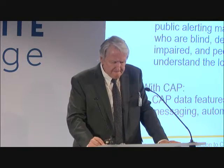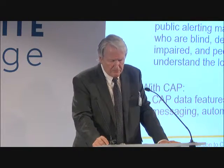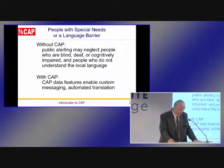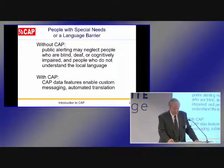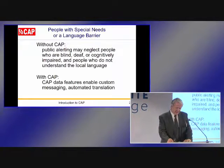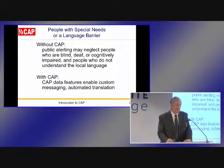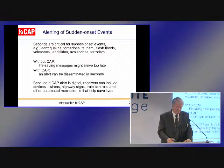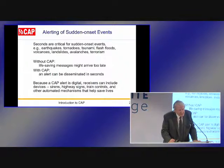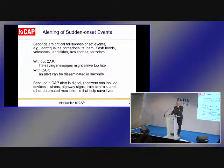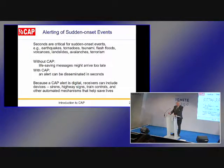Many people in harm's way are underserved with current public alerting because they are blind, they are deaf, they are cognitively impaired, or they do not understand the language — like me here in Geneva, not understanding the language being used in the alert. These issues are addressed by simply exploiting the data features of CAP with some automated translation. Some types of hazard occur so suddenly that seconds can mean the difference between timely, life-saving alerts and alerts that arrived too late.